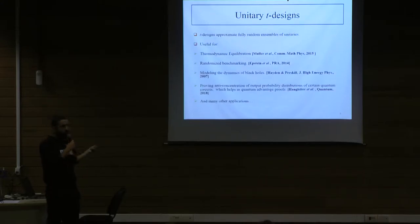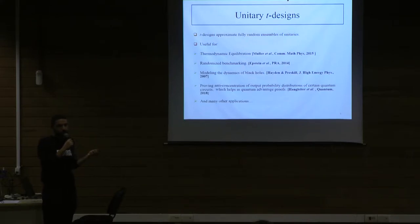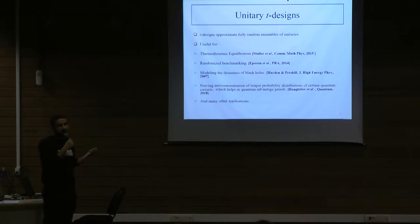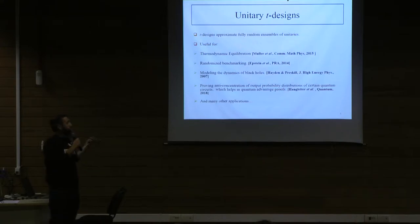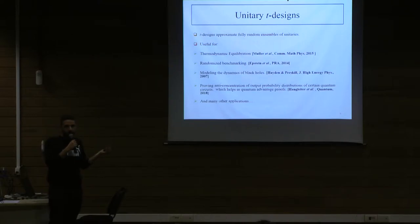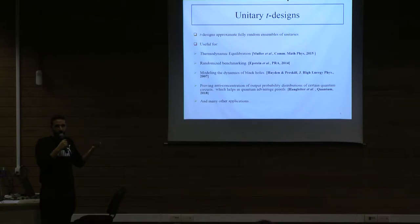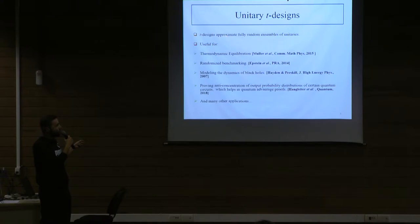The objects we are interested in studying are basically called unitary T-designs. They are ensembles of unitaries — sets of unitaries along with a probability distribution over these sets. What these do is mimic genuine hard randomness up to T-th order statistical moments. Hard randomness is inefficient to generate in general; you cannot generate it with an efficient process. But these unitary T-designs you can generate very efficiently in polynomial time.